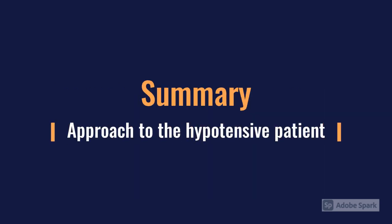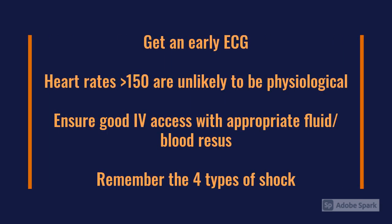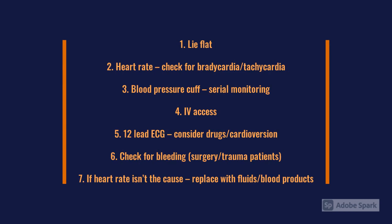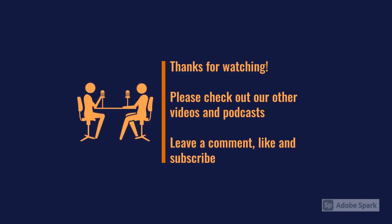Key summary points for the approach to the hypotensive patient: get an ECG early to determine whether there's a cardiac cause, remembering that heart rates above 150 are unlikely to be physiological. Ensure good IV access and resuscitate appropriately with fluids or blood products. Remember the four types of shock: distributive or vasodilatory, hypovolemic, cardiogenic, and obstructive. We hope this helps you structure your approach in simulations and clinical practice.